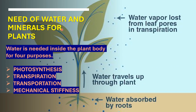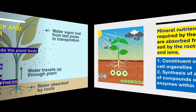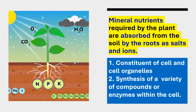What is the need of water and minerals for plants? Water is needed inside the plant body for four purposes: photosynthesis, transpiration, transportation, and mechanical stiffness. Mineral nutrients are also required by the plant and are absorbed from the soil by the roots as salts and ions.